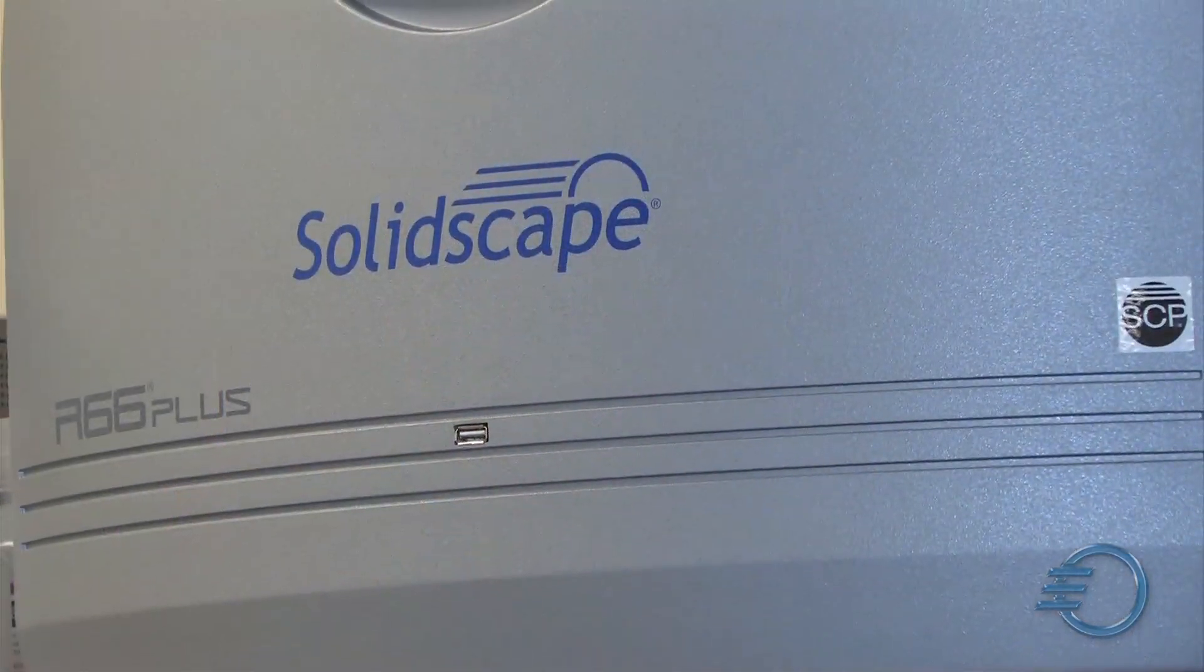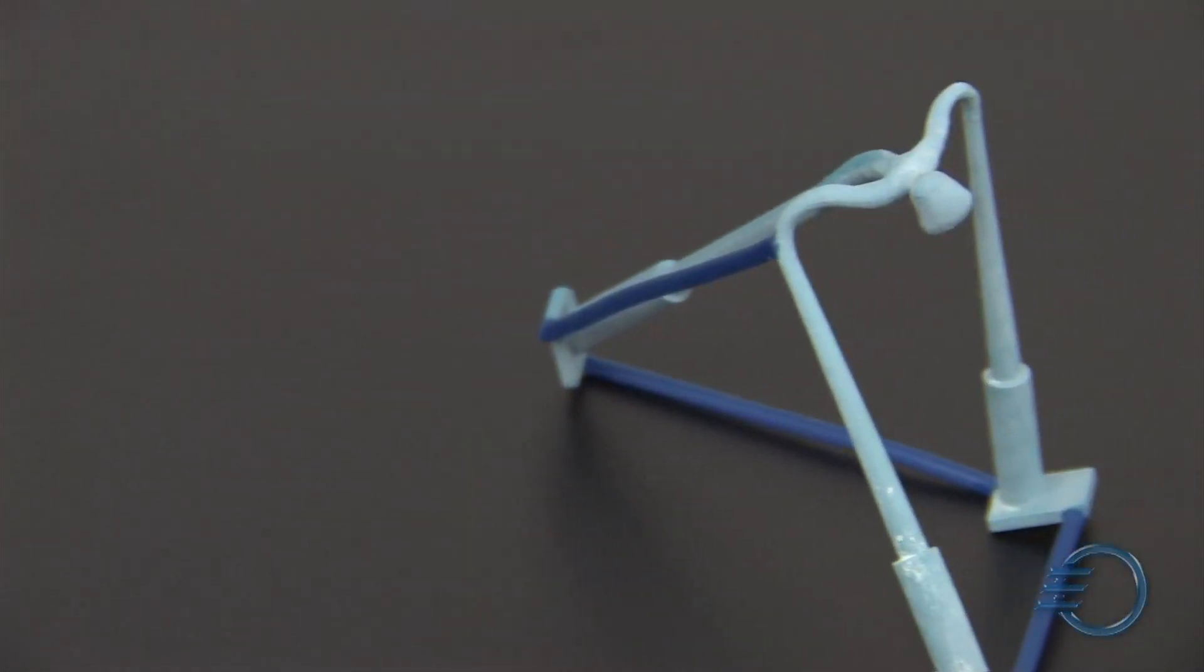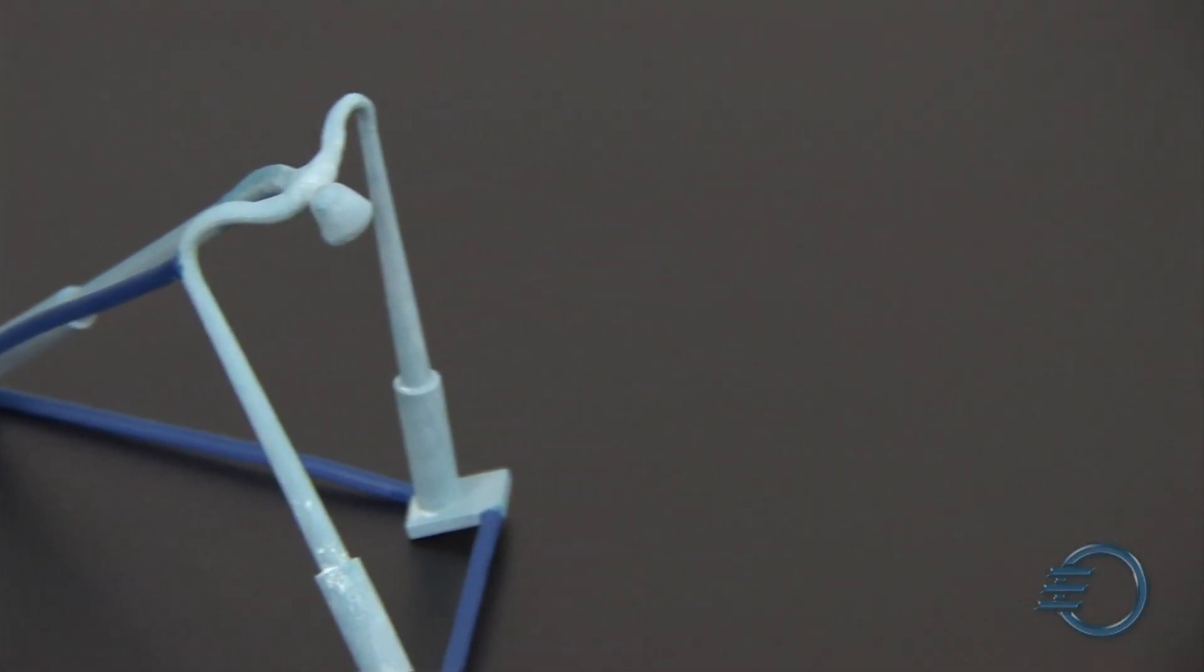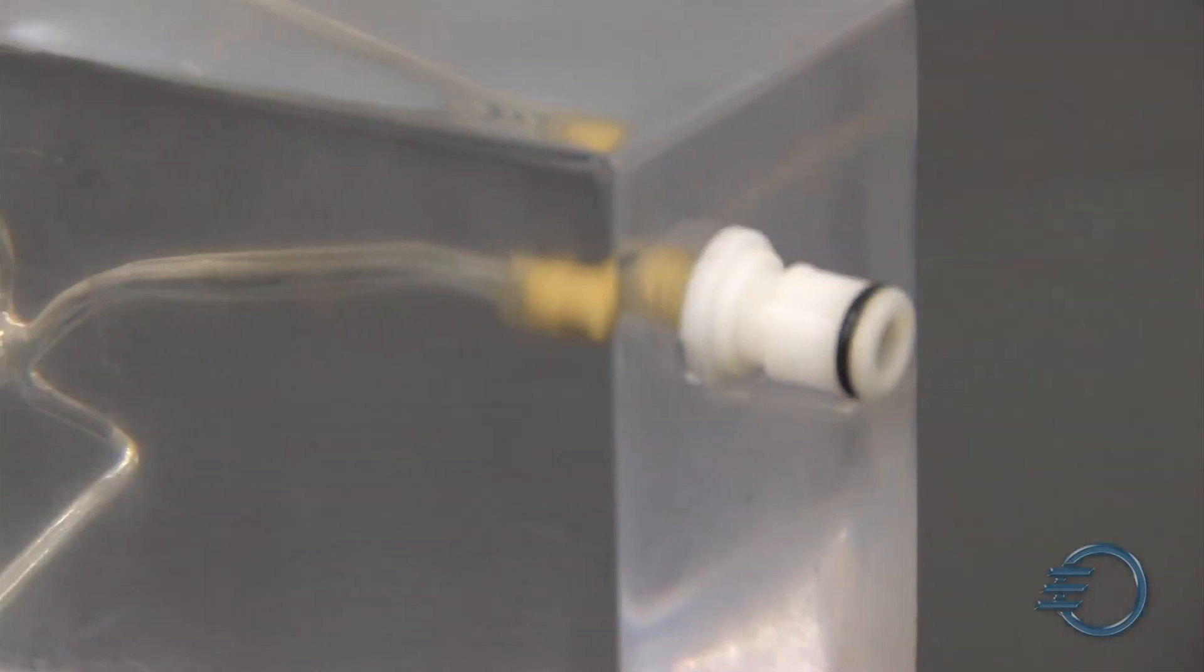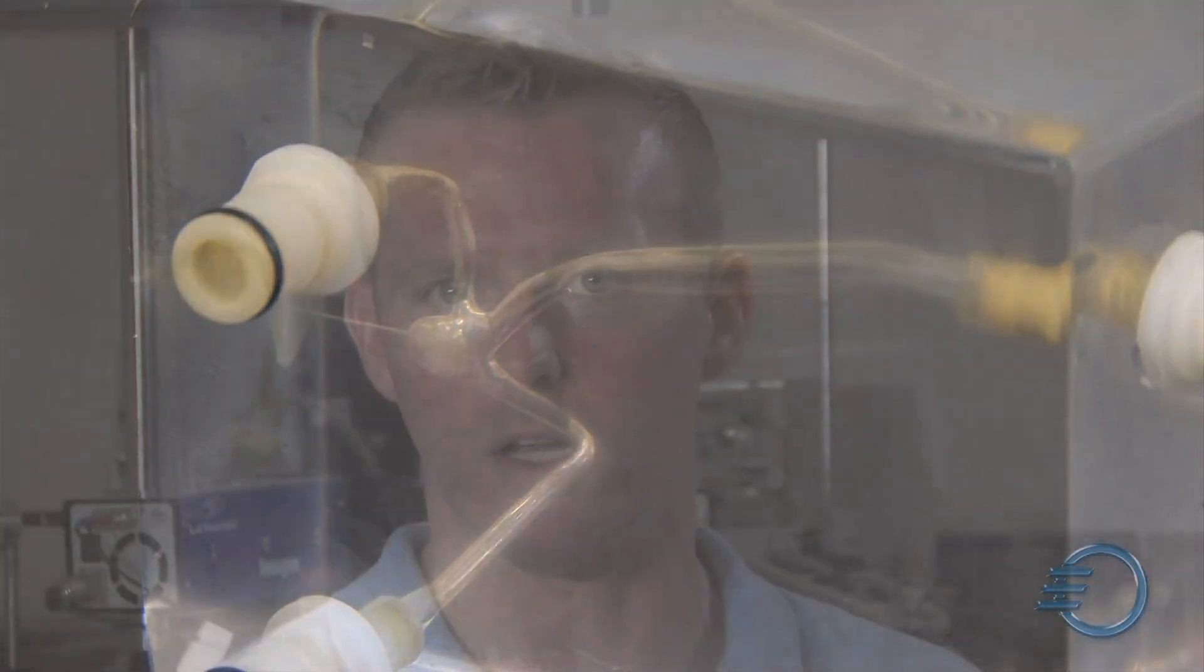Our SolidScape machine is the backbone of our modeling process. We use that to build the cores, to build the blood vessel models that we then translate into transparent flow models for our experiments. So all of the ground truth data that's informing our simulations in the end comes from these models that the SolidScape machine helps us build.